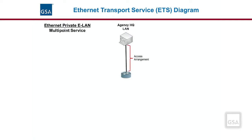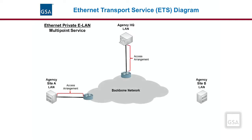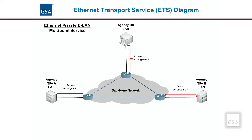This diagram is an example of Ethernet transport service. ETS provides point-to-point, point-to-multipoint, and multipoint-to-multipoint connections. This diagram shows an Ethernet private ELAN multipoint service where three agency sites are connected via Ethernet transport over a backbone network. Per the EIS contract, carrier-grade Ethernet transport service for agencies will be implemented over an MPLS backbone. Each site requires its own access arrangement, and each location can have a different port bandwidth. The access arrangement for each site is not included in the ETS pricing and is handled and priced separately.